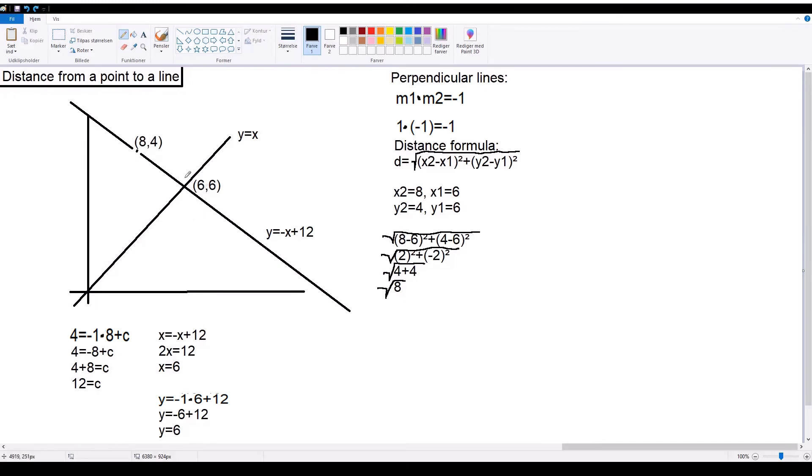Next, what you want to find is the intersect between the two lines. The way you do this is by setting these two equations to be equal to each other. We already know that y equals y, so we can just remove those from the equation and simply set the two other sides of the equal signs equal to each other. So, in this case, x equals negative x plus 12.